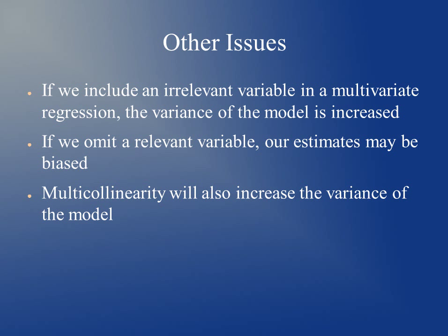Other issues include including an irrelevant variable in a multivariate regression — if we include something not associated with our outcome, it just adds more variance to our model. If we omit a relevant variable — an x that actually is related to y — our estimates will be biased because we aren't modeling the true relationship. Another problem is multicollinearity, when our predictors are highly correlated with each other, which also results in increasing the variance of the model.